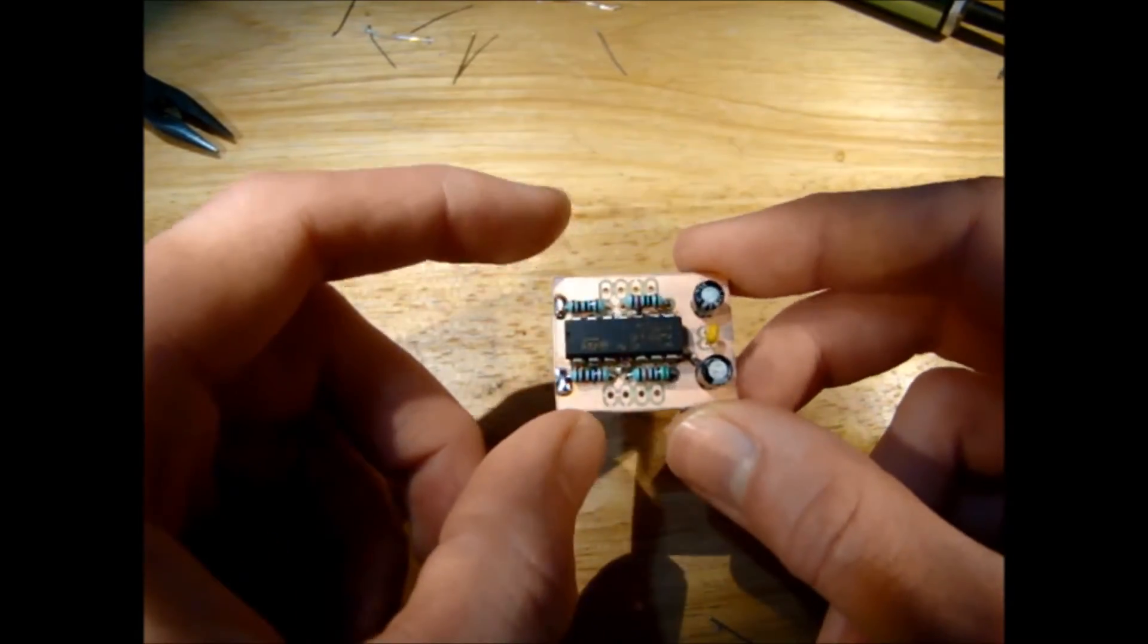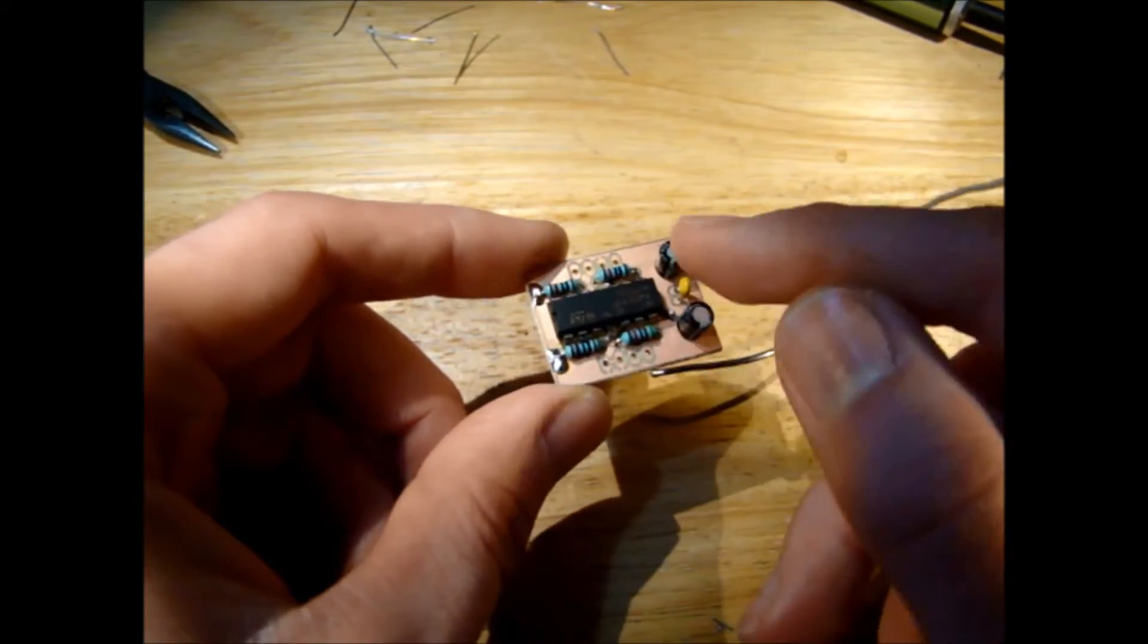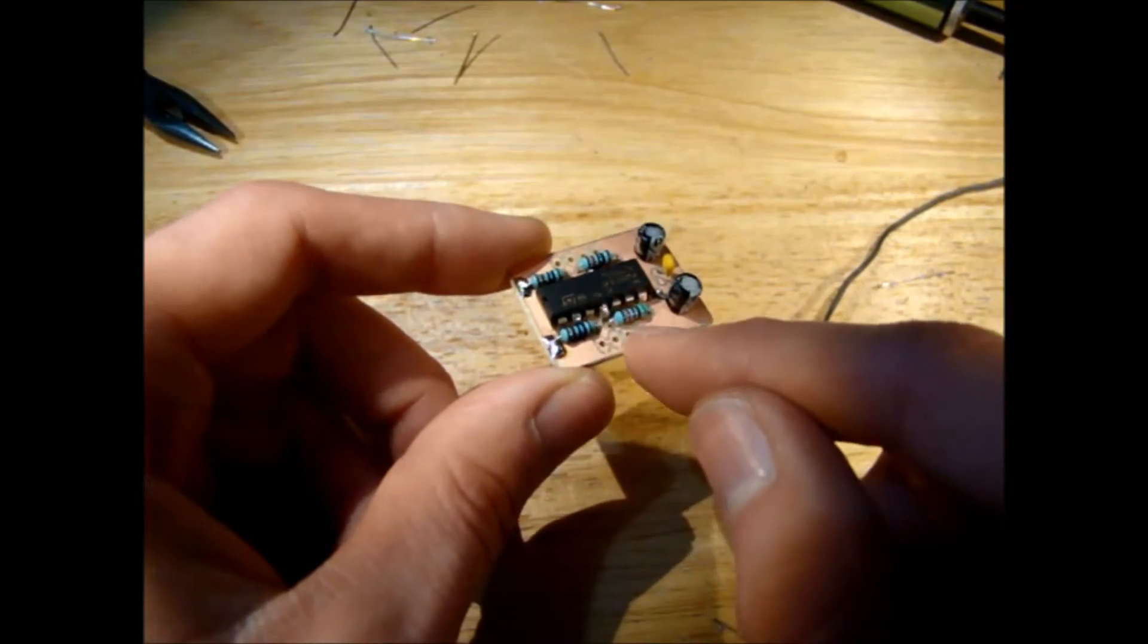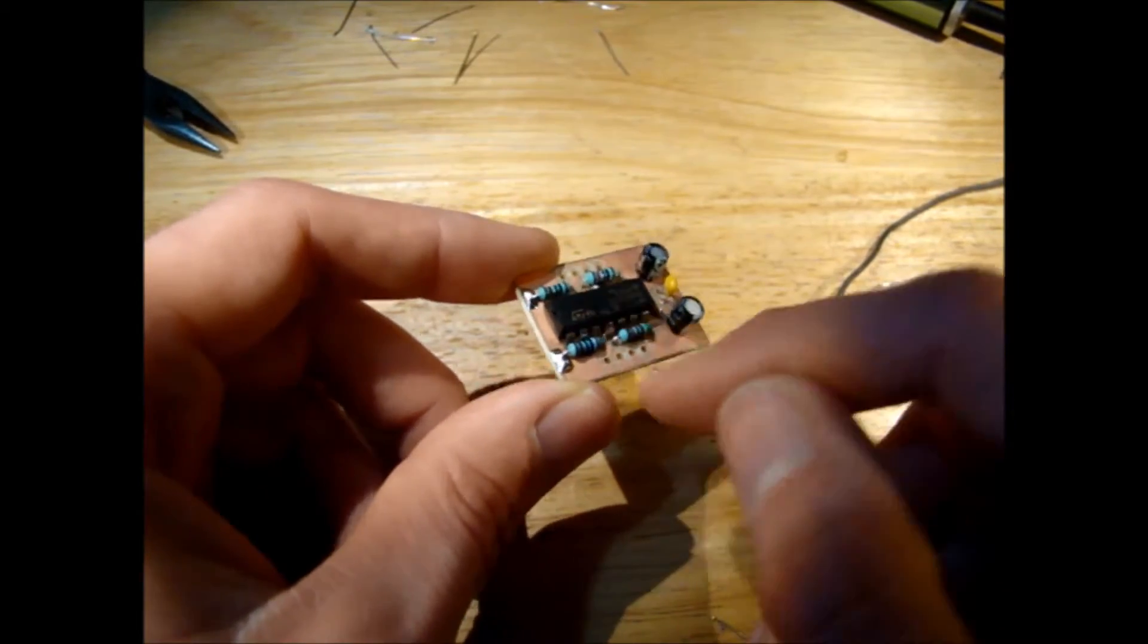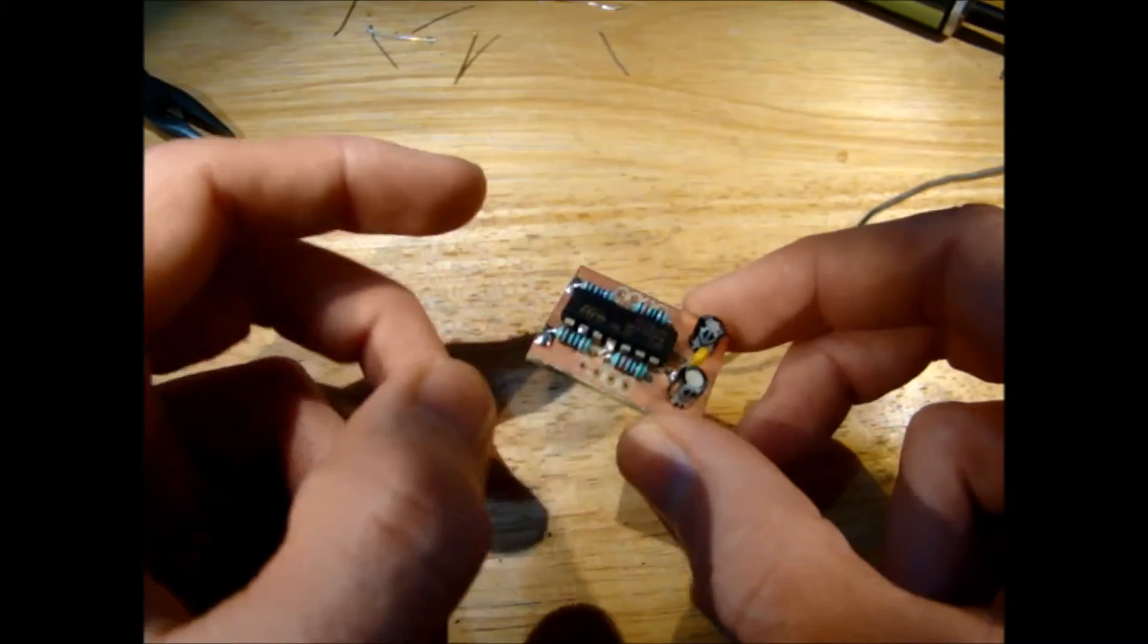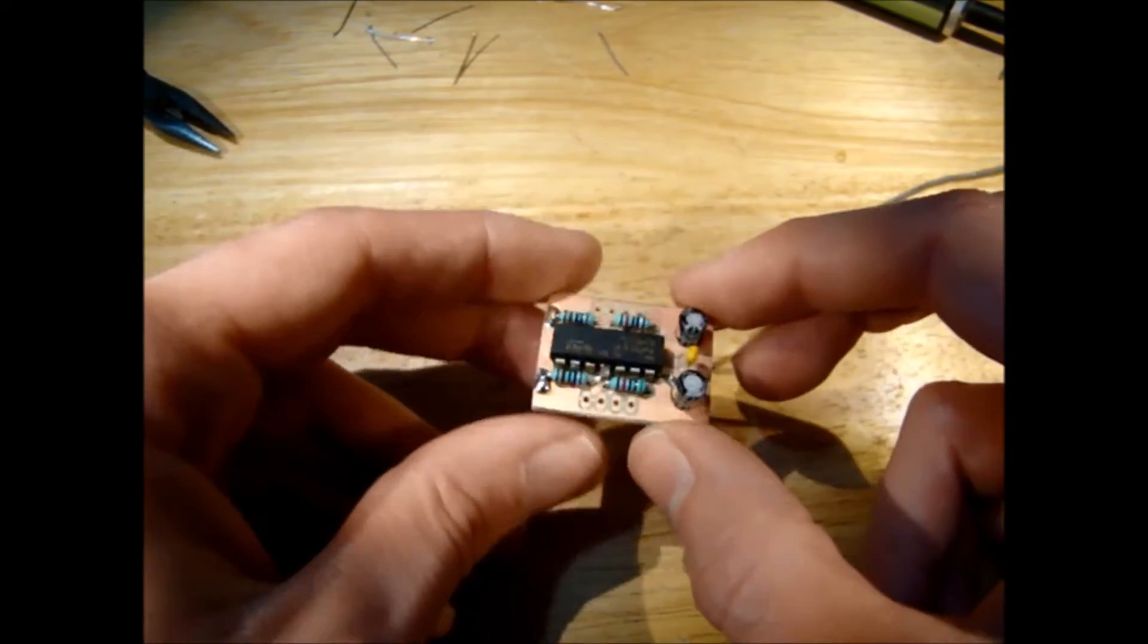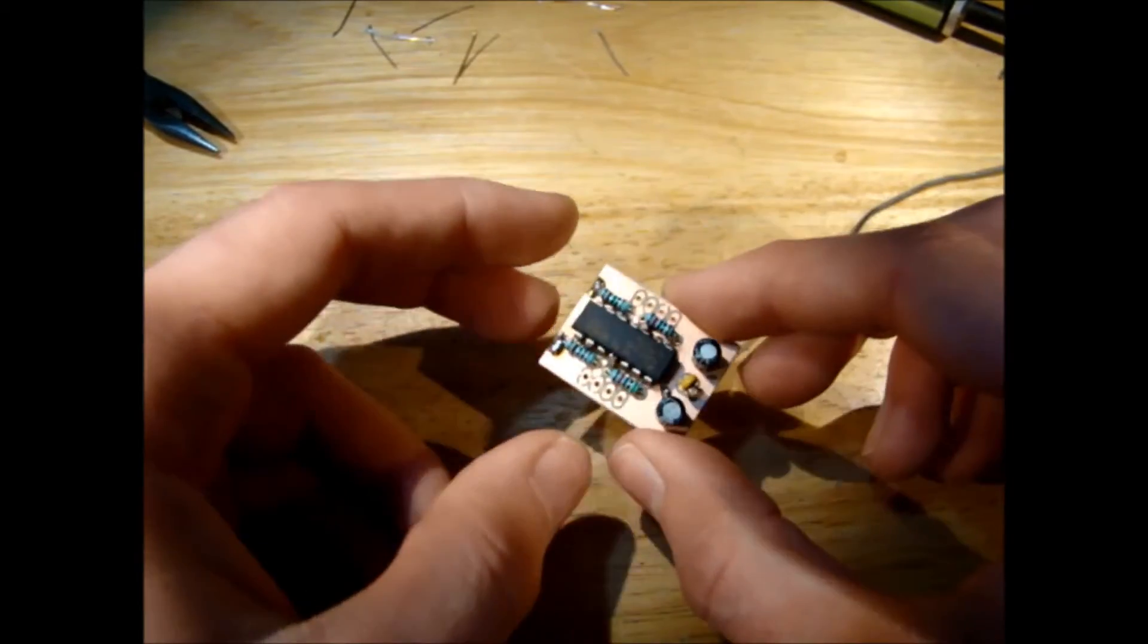If you were putting this in a tractor this would be as far as you'd go. You'd have all these components soldered on and you just solder your wires for your LEDs into these holes here. But because I want this as a prototype to test it I'm going to solder some pin headers in here and that will let me put it into a breadboard.